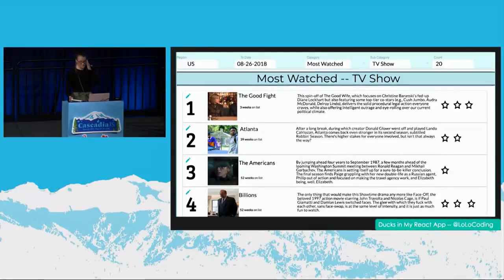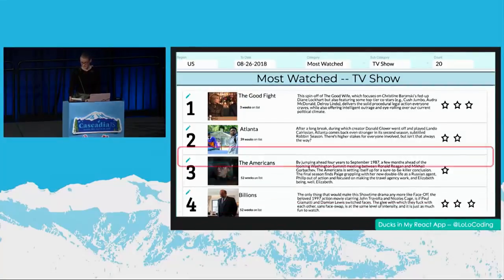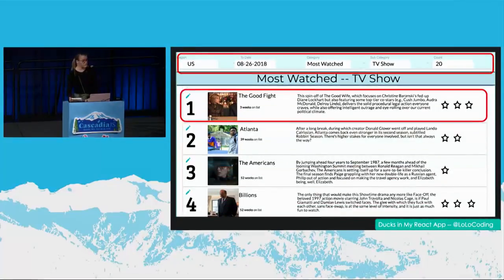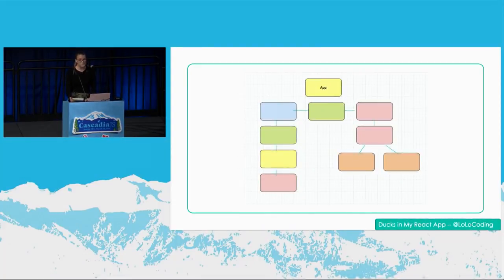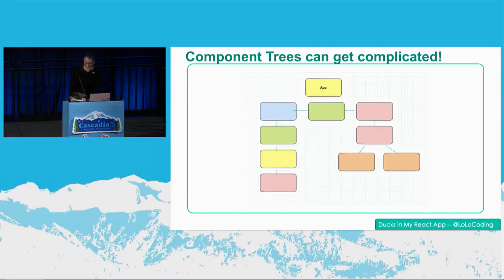Today I'm going to be using a React app that aggregates viewing data to create a most-binged TV show app. This app can be divided into components: the nav, the individual show, and the list view. The architecture of this app is relatively straightforward, but we all know that things can get complicated really quickly. And thus, developers at this point are often forced to discover the not-so-glamorous parts of React.